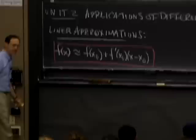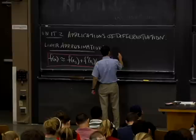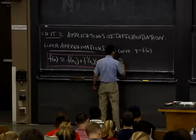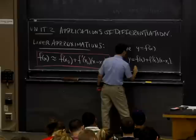Let me describe what it means. What it means is that if you have a curve y = f(x), it's approximately the same as its tangent line. The other side of the formula is the equation of the tangent line.